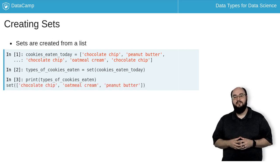Finally, if I print it, you might notice that although I had three chocolate chip cookies in my set, once I made it a set, there is only one occurrence of it in that set. This occurs because sets only store unique items.